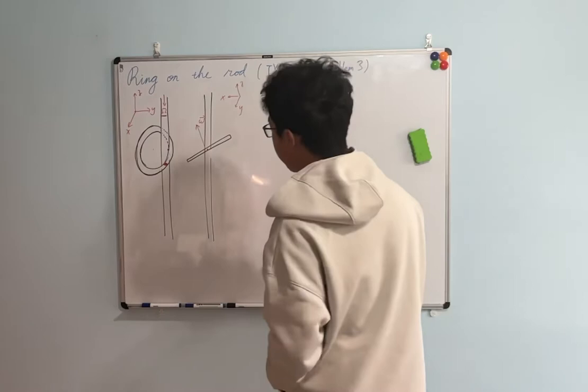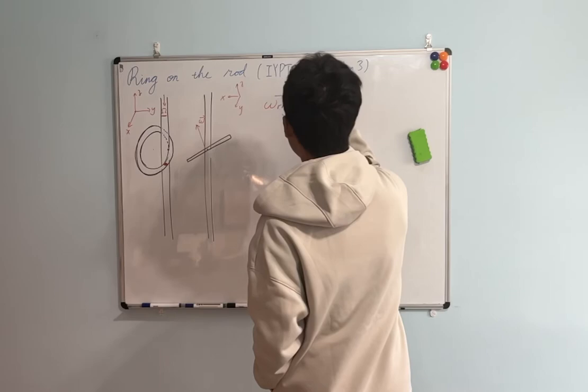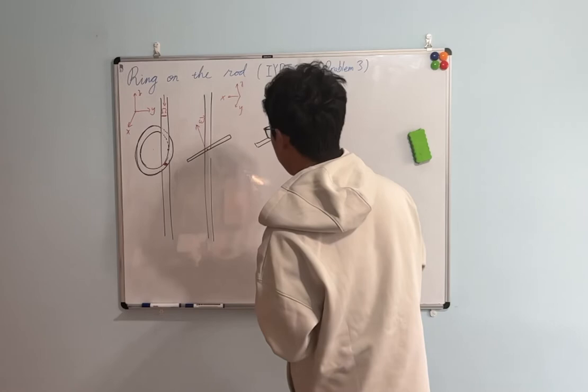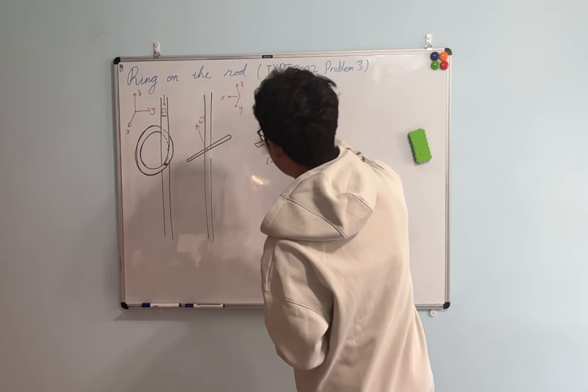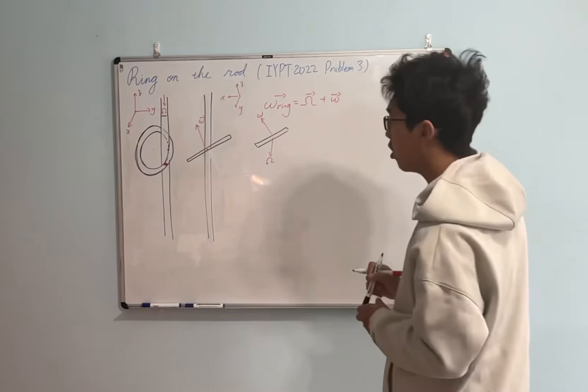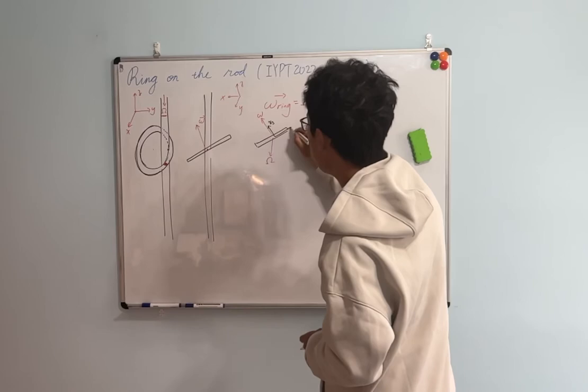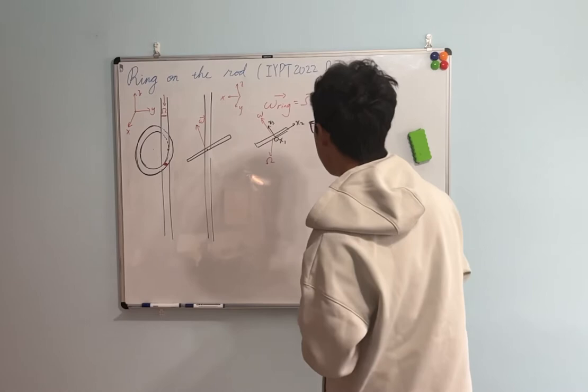Now we calculate the angular momentum of the ring. As stated, the angular velocity of the ring is the sum of the two components. On the diagram we have a vertical Ω and a spinning angular velocity parallel to the normal vector. To calculate the angular momentum we need the components along the principal axes — we call these x3, x2, and x1 (out of the whiteboard). We can then write the inertia tensor in this form.